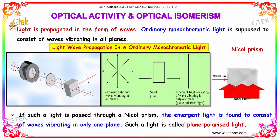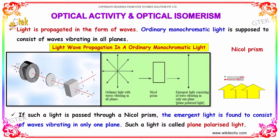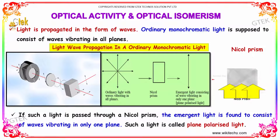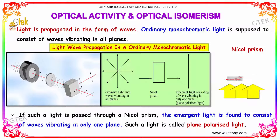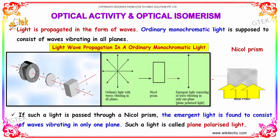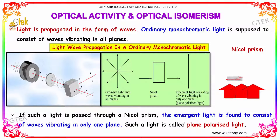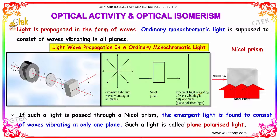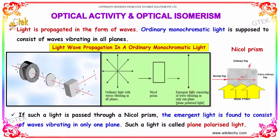Light is propagated in the form of waves. Ordinary monochromatic light consists of waves vibrating in all planes. If such light is passed through a nicol prism, the emergent light is found to consist of waves vibrating in only one plane. Such light is known as plane polarized light.